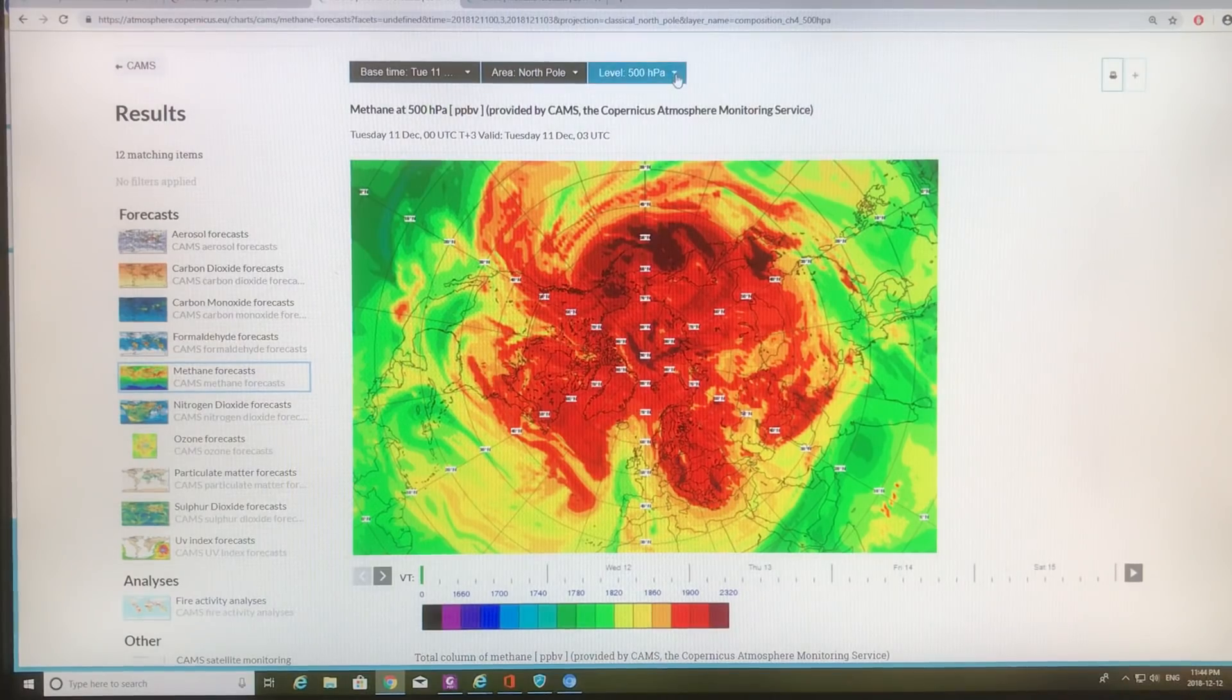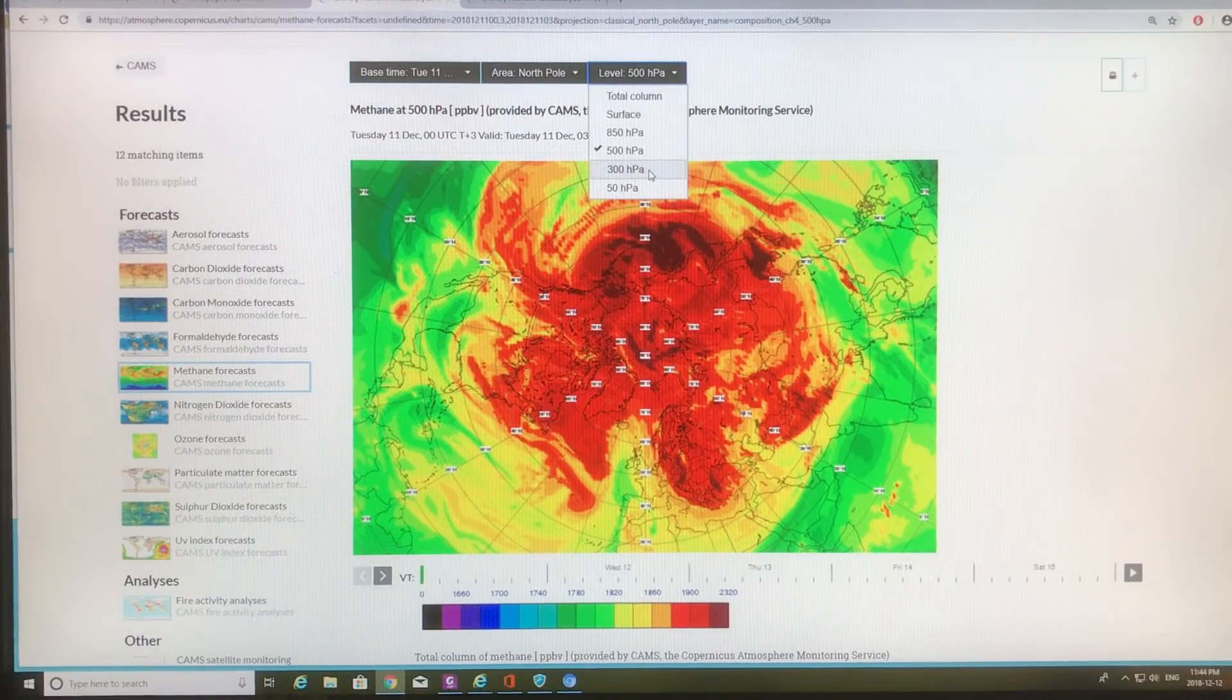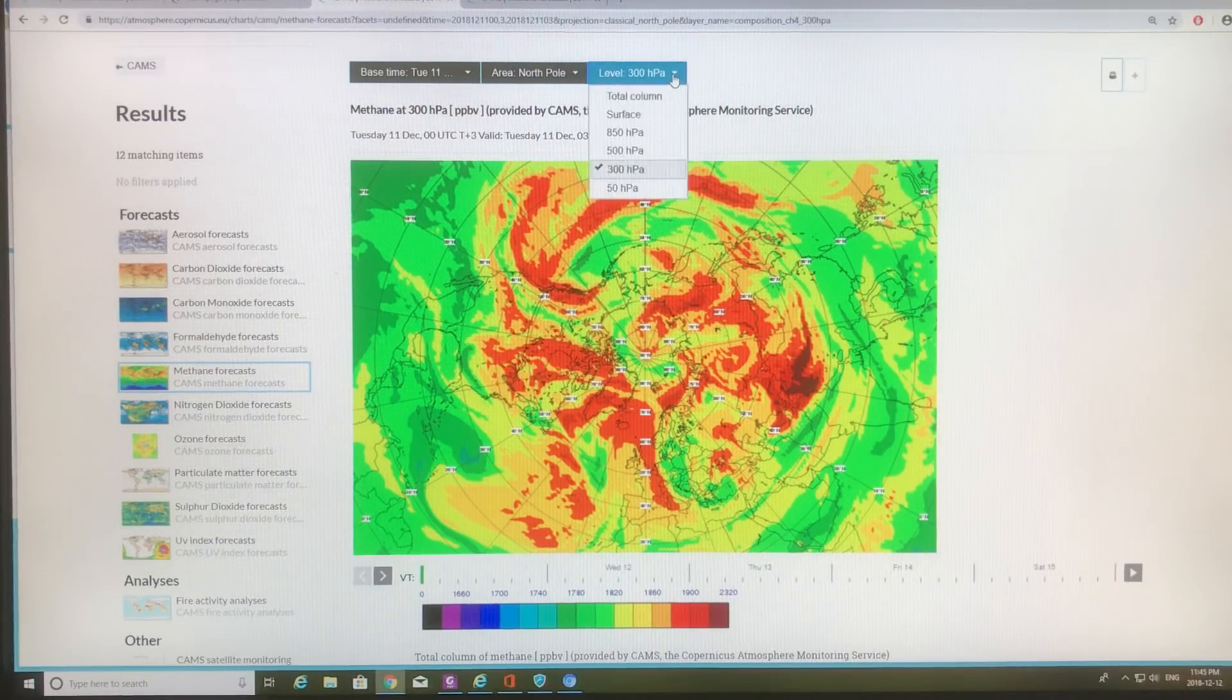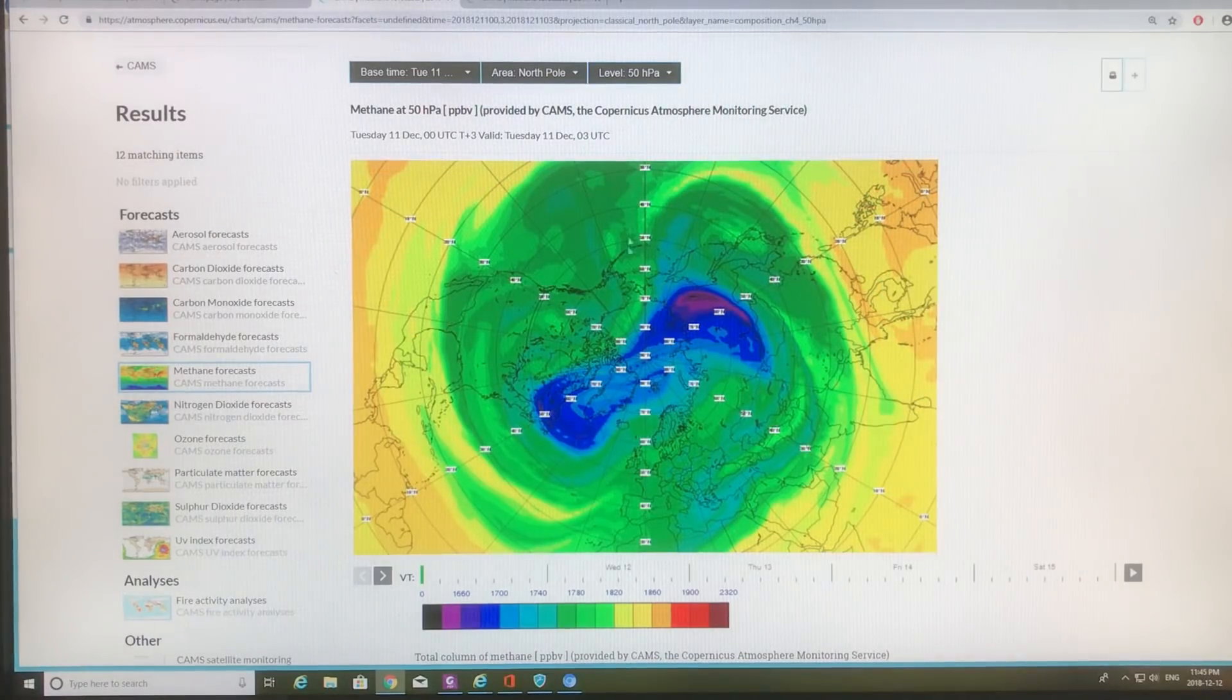When we go to about seven or eight kilometers, we're starting to get less, the concentrations are starting to go down. And then when we go to 50 hectopascals, we're starting to get into the stratosphere. You can see that the methane levels have pretty much gone, and in the center here, they're actually lower, and we get a ring here of methane. So that's sort of the characteristic that we see.